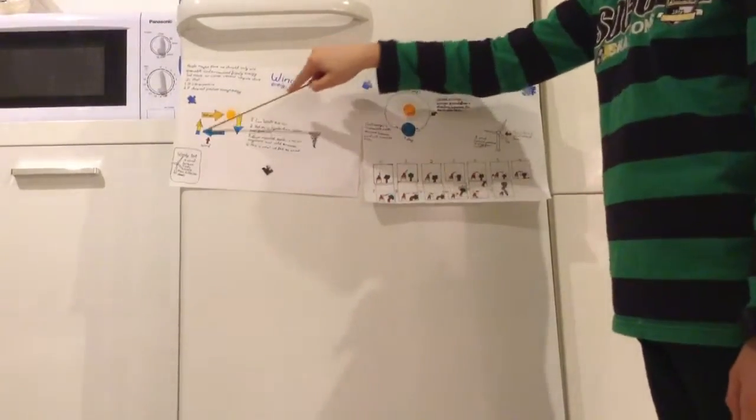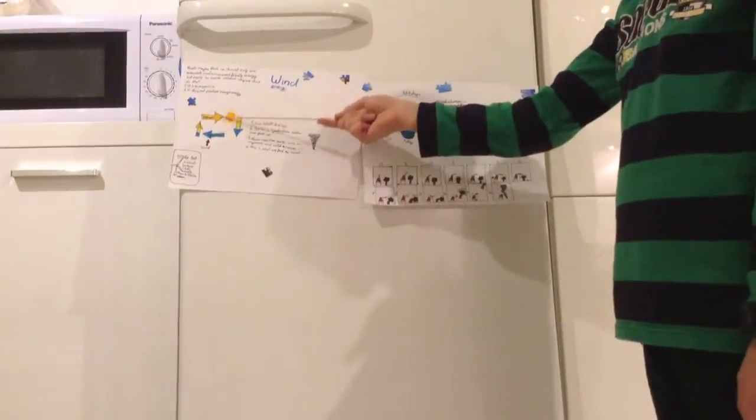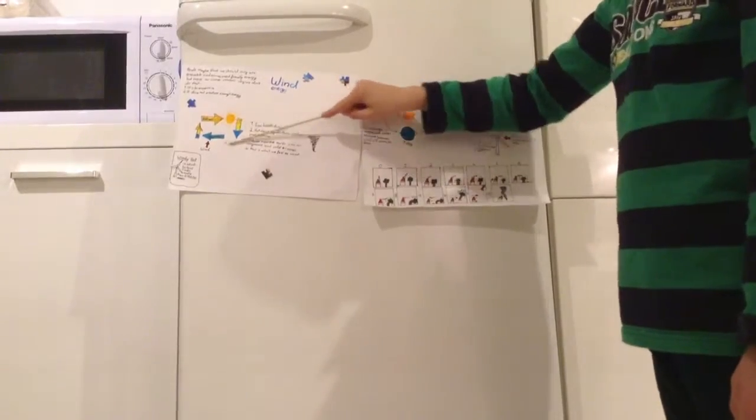This is called the wind cycle because the sun will always see cold air and it will always come cold air back.